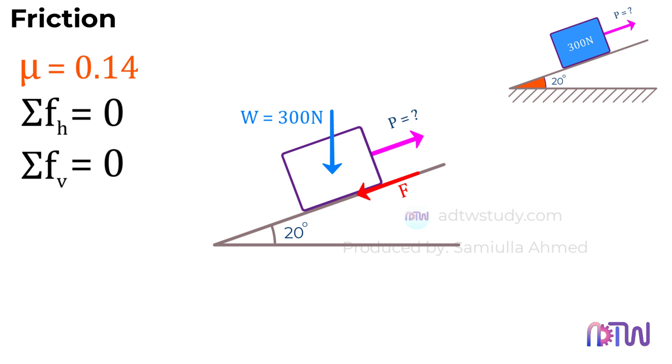However, if we consider our horizontal and vertical axes as in previous problems, we will have three inclined forces: the pulling force P, the reaction force R, and the frictional force F. To solve this problem, we need to resolve all these forces. But if we change our perspective and consider the inclined plane as our horizontal axis and the perpendicular to the inclined surface as our vertical axis, we will have only one inclined force, the weight W of the body.